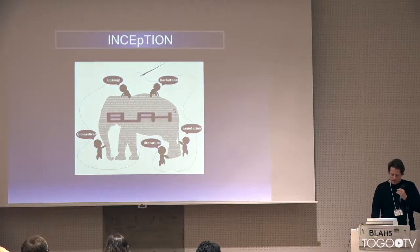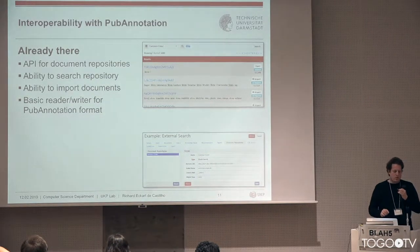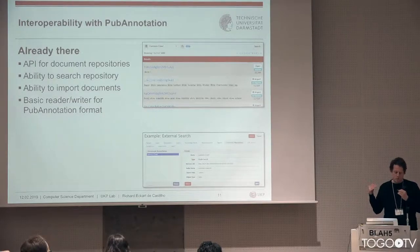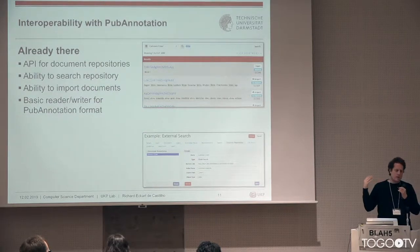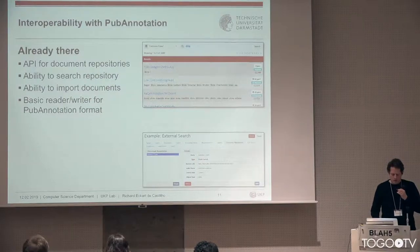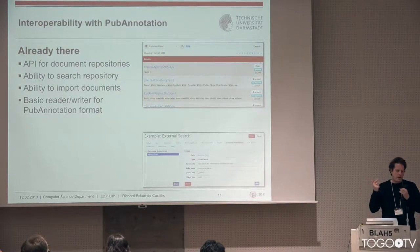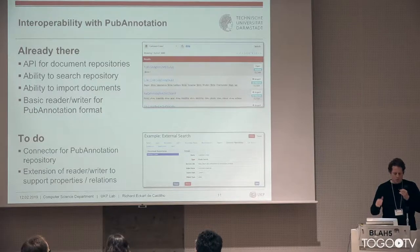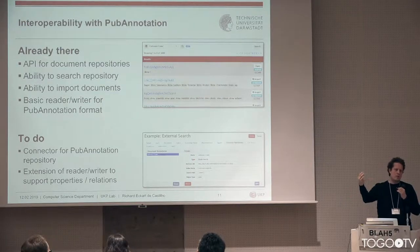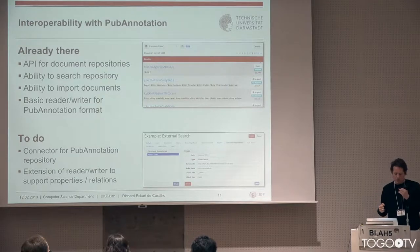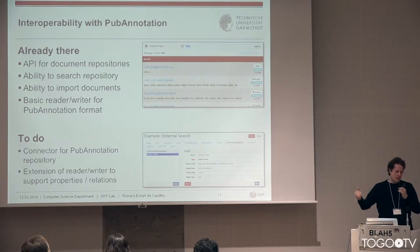We want to look into improving the interoperability of the annotation platform with the PubAnnotation platform. In Inception there is already an API for document repositories, which we currently use to connect to Elasticsearch document repositories. The idea is to have a generic API that you can use to connect to all kinds of data repositories or text repositories, with the ability to search the repository and import documents on demand. We already have a basic reader and writer created earlier this year for the PubAnnotation format. Now we want to use our API to create a connector to the PubAnnotation repository so that we can search it, immediately import data from it into the annotation platform, perform our text annotation, and possibly publish the data back to the repository.